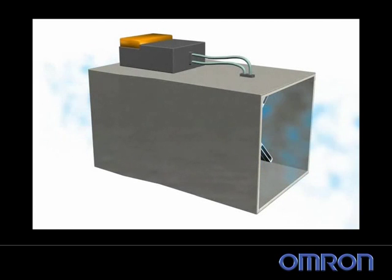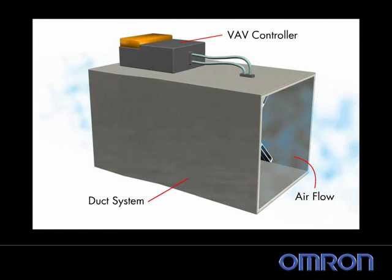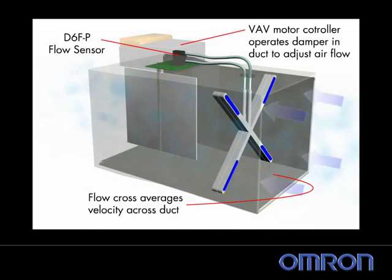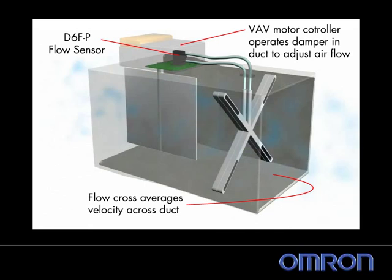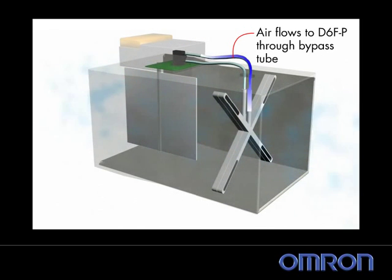In this bypass example, a variable air volume controller used to adjust air flow in multi-zone commercial buildings uses a D6FP flow sensor for feedback and control. The mass flow sensor's high resolution at low flows is particularly beneficial in the HVAC industry, as lower velocities are used to reduce noise and to ensure sufficient fresh air is being introduced.